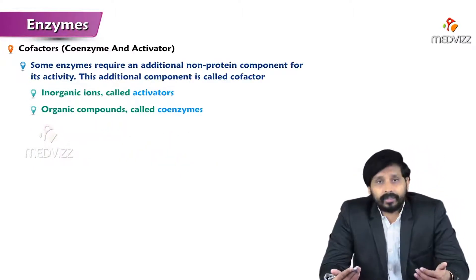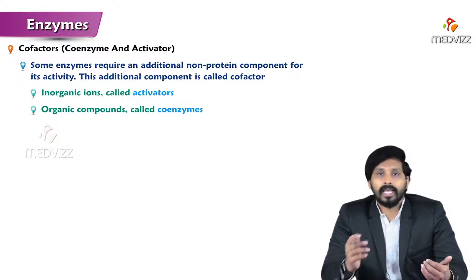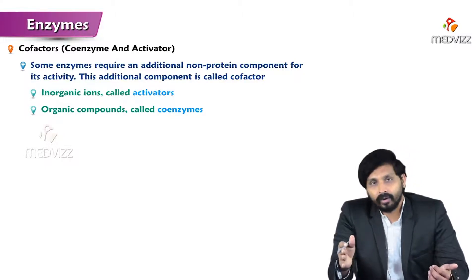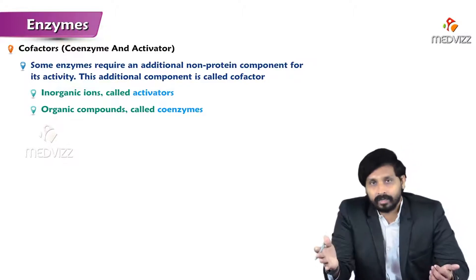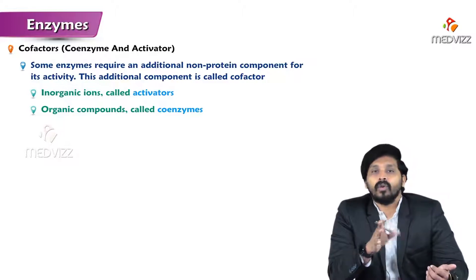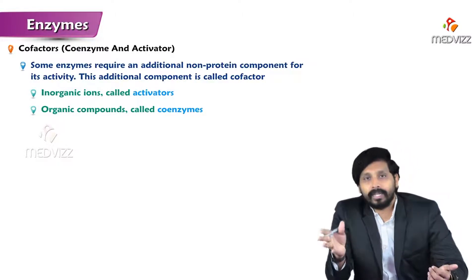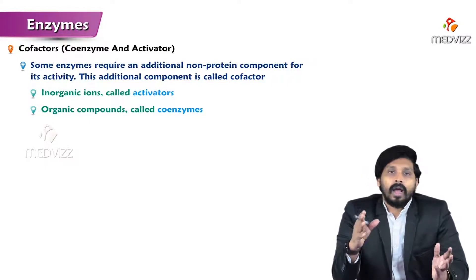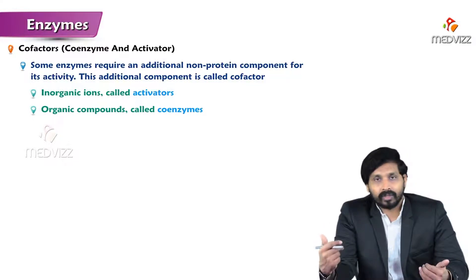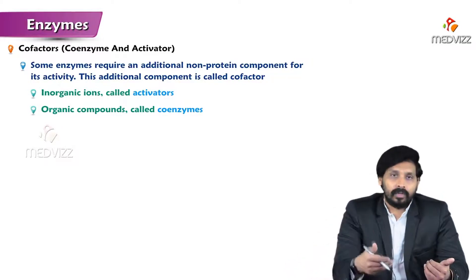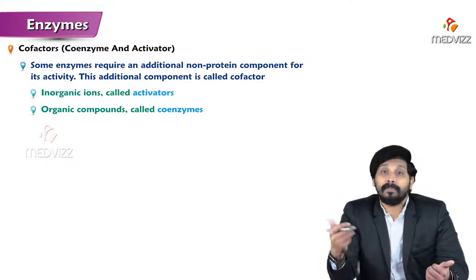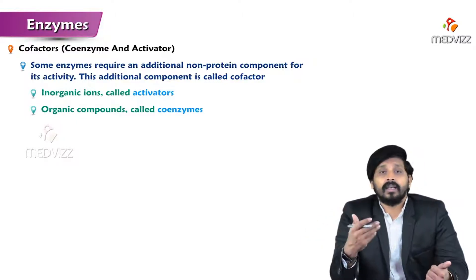Cofactors: enzymes inside the cell mediate or catalyze chemical reactions, but they themselves require or depend on substances such as coenzymes or activators. The term cofactor includes both coenzymes and activators. Coenzymes are organic in nature - B complex vitamins especially. Every B complex vitamin has a super active form: B1 thiamine's active form is TPP (thiamine pyrophosphate), B2 gives FAD or FMN, B3 gives NAD or NADP, B5 gives CoA, B6 gives PLP (pyridoxal phosphate), B7 gives biocytin, B9 gives tetrahydrofolate.